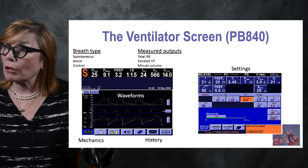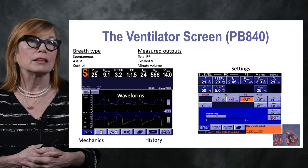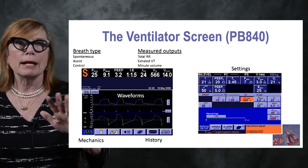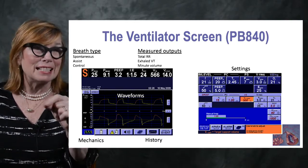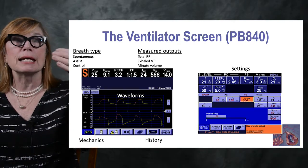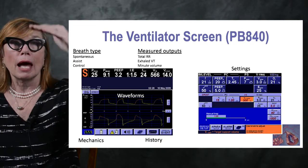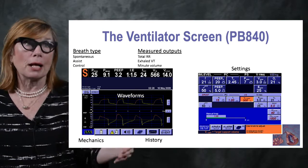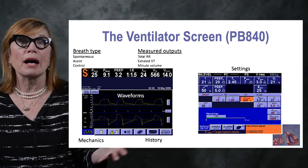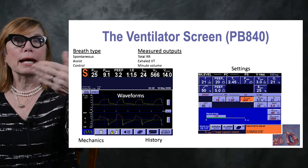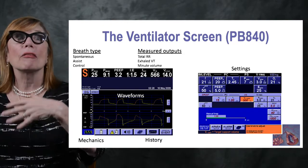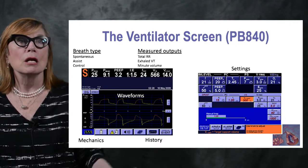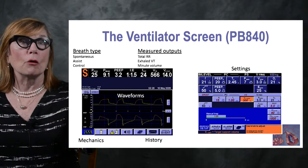We can also look at patient history, mechanics, and waveforms showing the dynamics of gas flow to an endpoint of either pressure or volume. On the lower part of the console you see the settings — here the patient is on bi-level, meaning high pressure/high time and low pressure/low time. Settings show frequency, high PEEP (20) and low PEEP (5), inspiratory time (2.45 of the cycle), pressure support on spontaneous breaths, flow, sensitivity, and oxygen concentration.